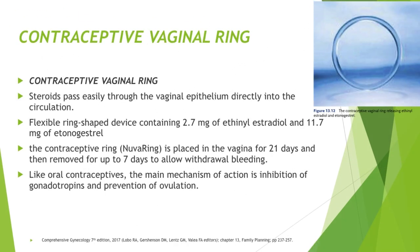The contraceptive vaginal ring, also known as NuvaRing, uses the fact that the vagina is a highly vascular organ, allowing steroids to pass easily through the vaginal epithelium directly into the circulation. This flexible ring-shaped device contains 2.7 mg of ethinyl estradiol and 11.7 mg of etonogestrel. It is placed in the vagina for 21 days and then removed for up to 7 days to allow withdrawal bleeding. Like oral contraceptives, the main mechanism of action is inhibition of gonadotropins and prevention of ovulation.